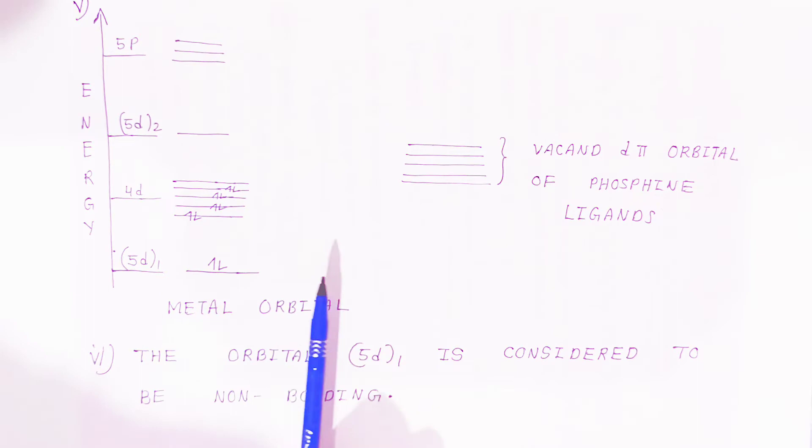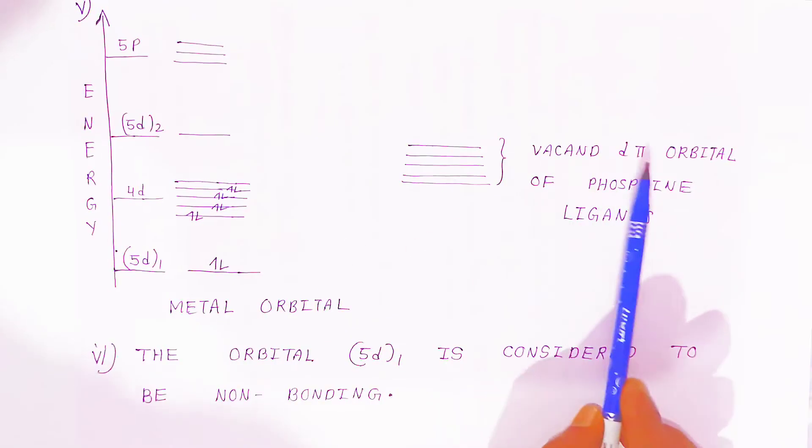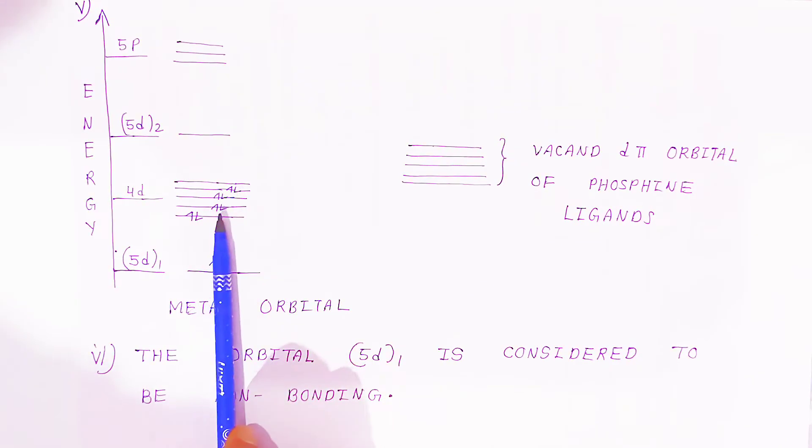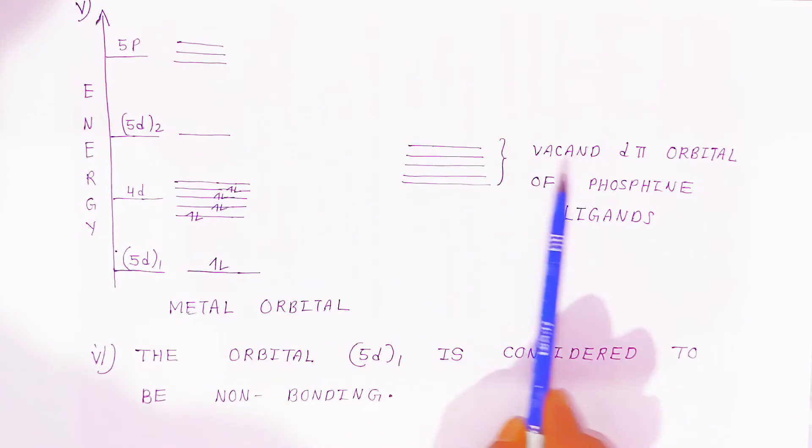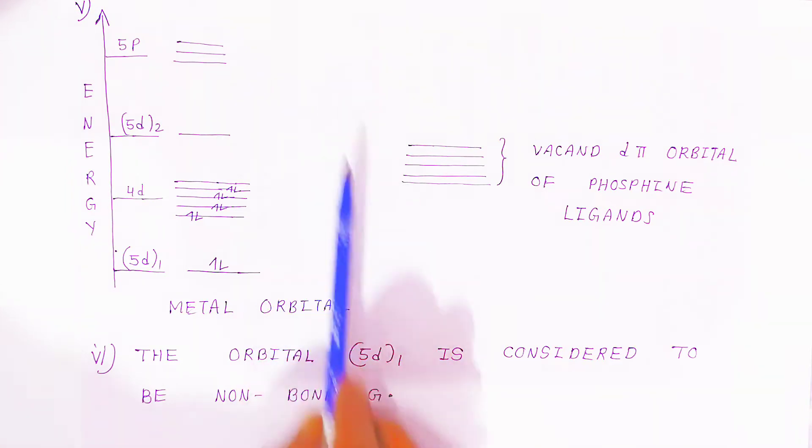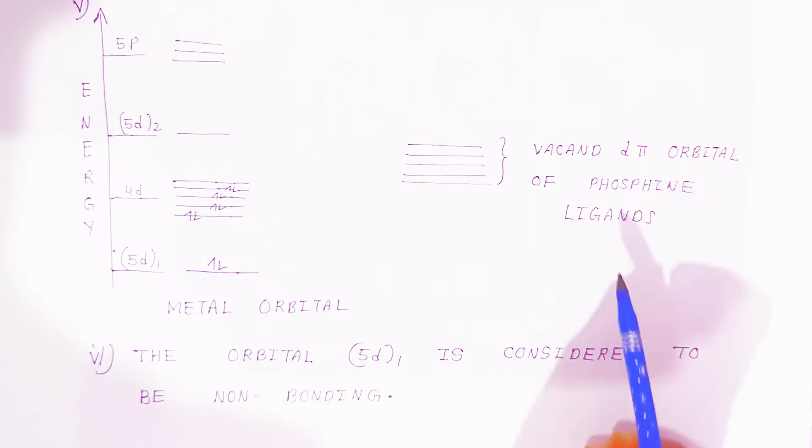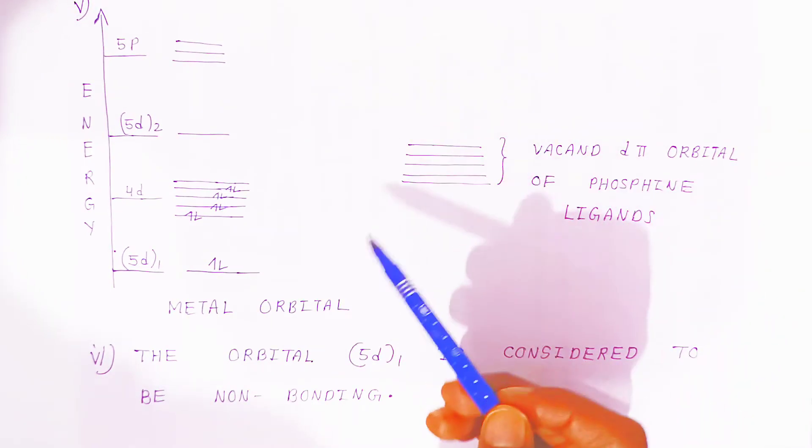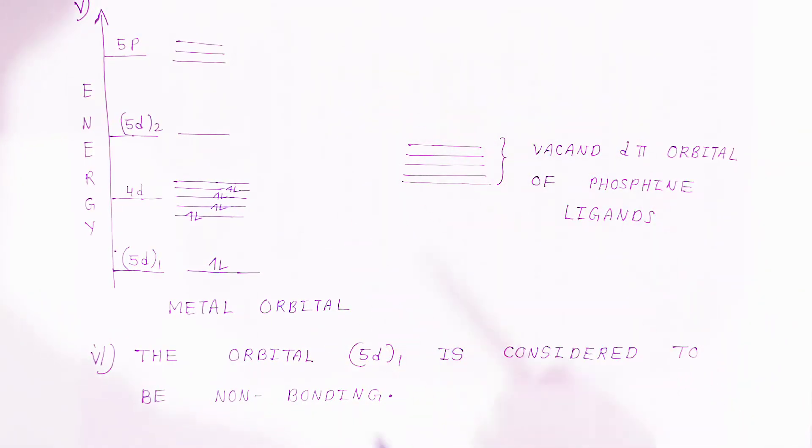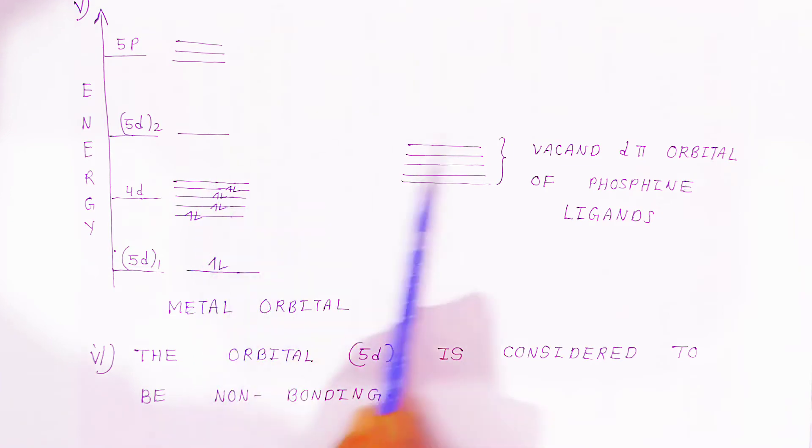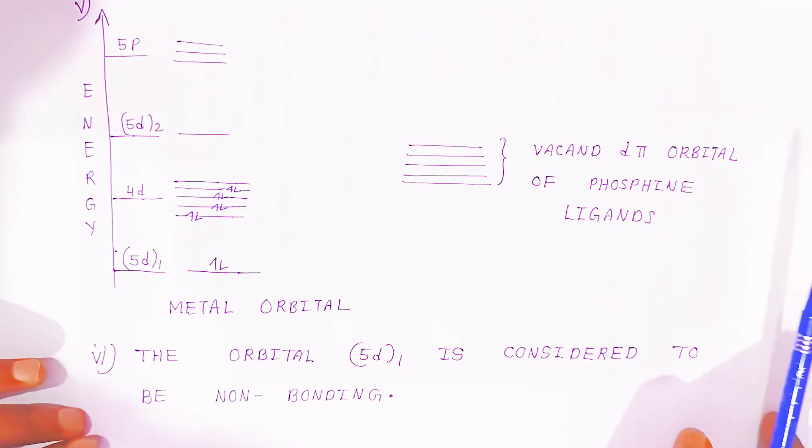Now we have vacant d-pi orbitals of the phosphine ligands. These are the filled sub-atomic s orbitals and vacant d-pi orbitals of the phosphine ligands.